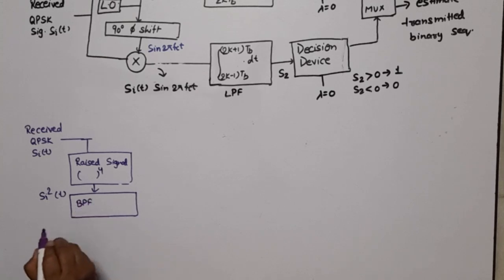The band pass filter is centered at 4 fc, which passes only 4 fc components. The output will be cos(4·2π fc t). But the carrier we need is cos(2π fc t), so a frequency divider divide by 4 is used. The output will be cos(2π fc t).